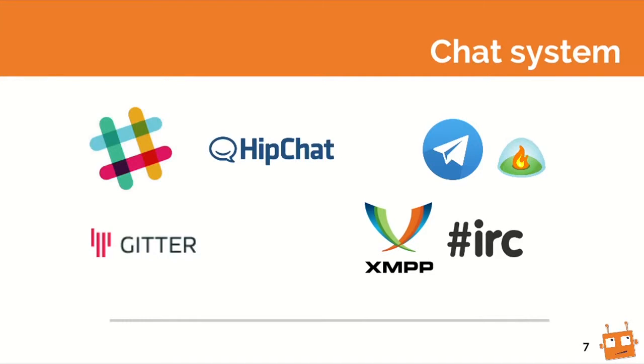So how can you set it up? It's pretty easy. First, you need a chat room — most of you already have one. We support the most common ones: Slack, HipChat, Gitter, Telegram, and also the standard protocols like XMPP and IRC. Those are pretty useful when you want a private chat room and don't want Slack or HipChat to host your environment.